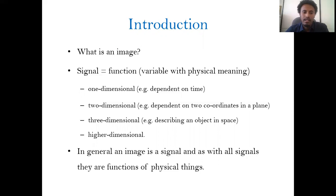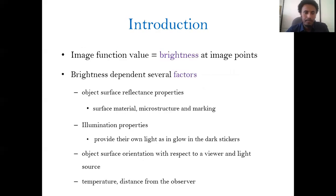In general, an image is a signal, and like other signals, it is a function of physical things — functions of independent variables. The most known independent variable is time for one-dimensional signals. An image is dependent on the spatial coordinate planes, which are the independent variables. The image function value can be expressed in terms of brightness — the variation of brightness gives you a sense of the image. Brightness depends on several factors.